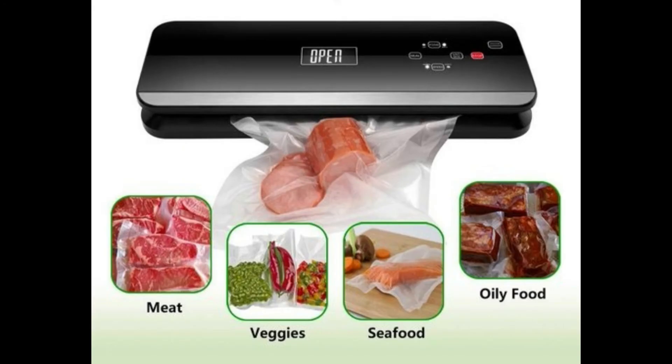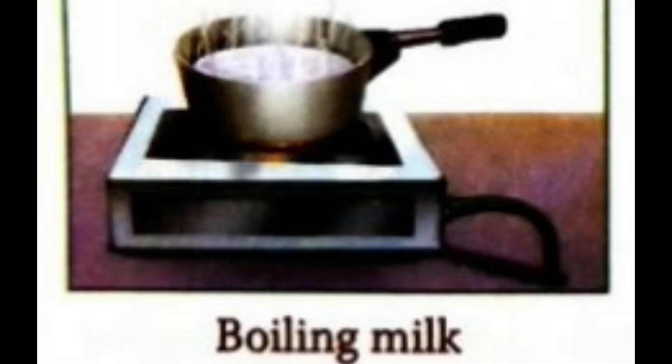Vacuum packing: in this process, the food is preserved in airtight bags or packets. Before packing, the air is removed with the help of a vacuum pump. It preserves food for a long time. For example, liquids, chips, nuts and meat. Boiling: milk can be preserved by boiling. Boiling kills the germs present in the milk.